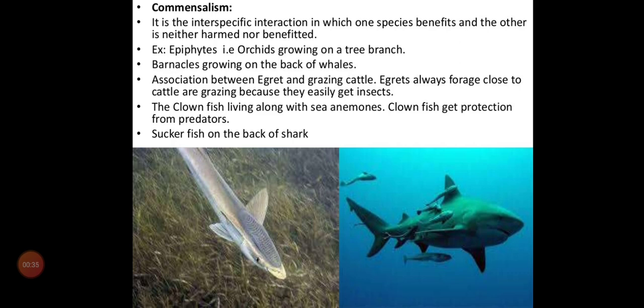Epiphytes are plants that grow on other plants — for example, orchids growing on a tree branch. For the tree there is no harm, because epiphytes use it only for shelter; they won't suck any food from the tree. If they were sucking food, that would come under parasitism. So epiphytes get no nutrition from the host plant, meaning no loss for species B. But species A is getting benefited because it needs space to grow — that is the concept behind commensalism.